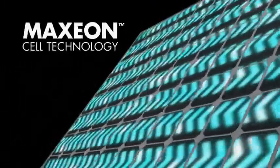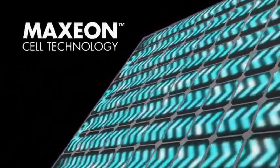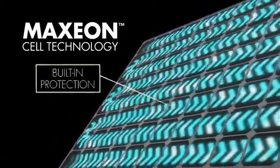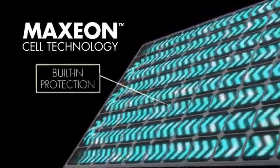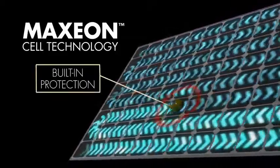SunPower Maxeon solar cells also perform differently when they are shaded. Diode protection is built into each cell, allowing electricity to pass through even in shaded situations.